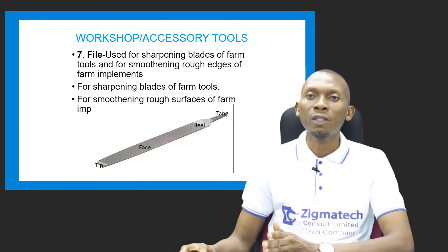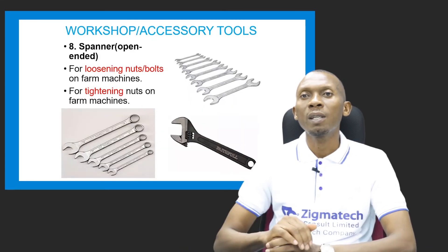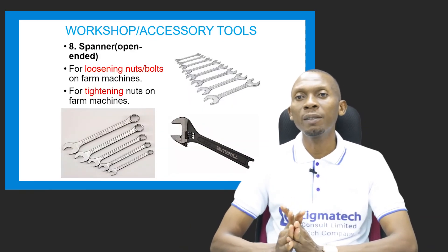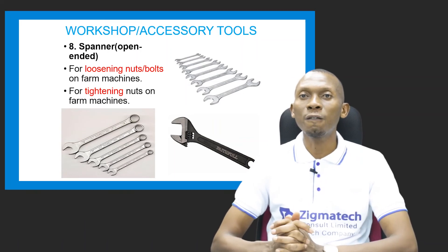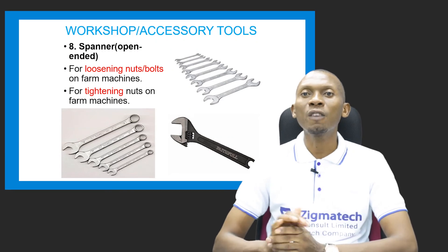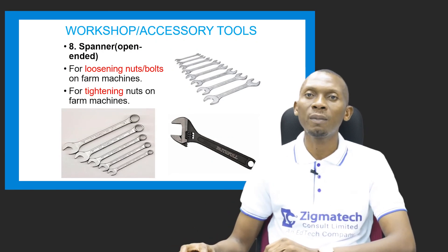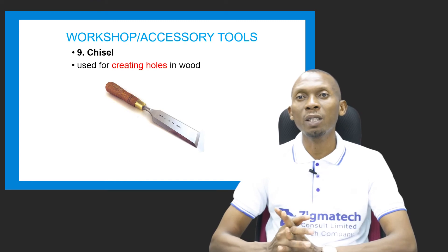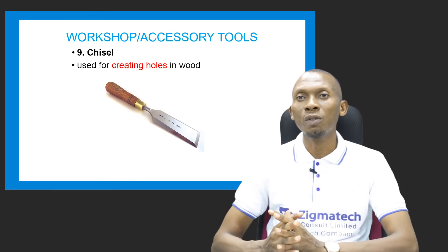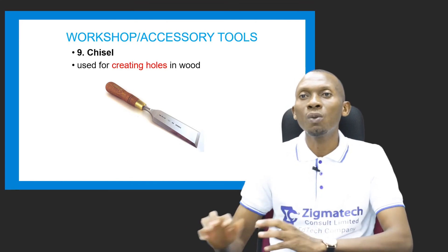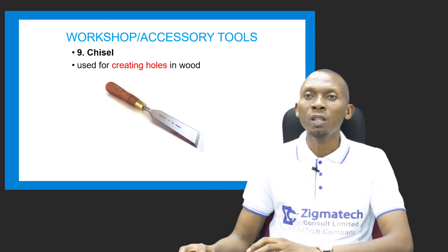The open-ended spanner is used for loosening or tightening bolts and nuts of farm machines. The chisel — which is used together with the mallet as I mentioned — is used for creating holes in wood.